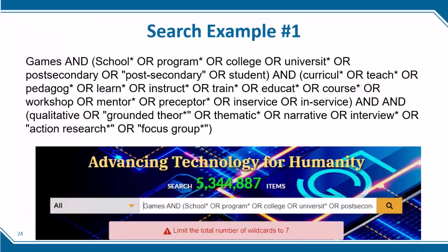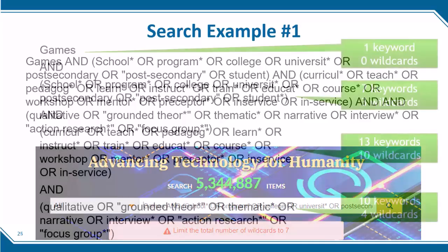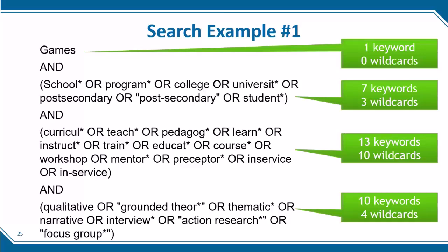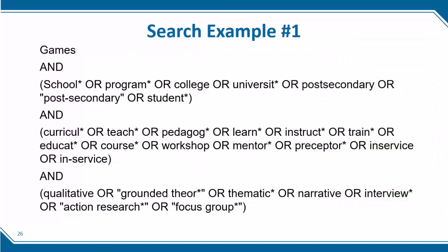Here is the first search example that does not work in IEEE Xplore. My first step is to break the search down so I can look at each search clause. I can easily see how many keywords there are in each search clause, and in this case they are all well within the 20 search term limit. In this search there are a total of 17 wildcards, so I will need to reduce that number by 10. When reviewing search strategies like this one, I regularly see instances of overuse of the wildcard. For example, the word "school" will automatically find "schools" plural and "schooling," so there's no need to use a wildcard here. Same with the terms "program" and "university." So I can quickly eliminate three wildcards.